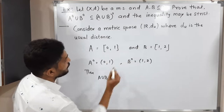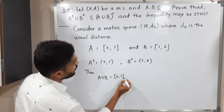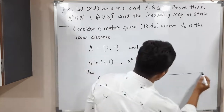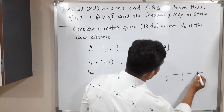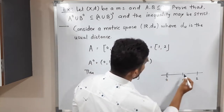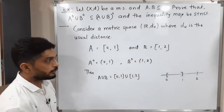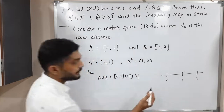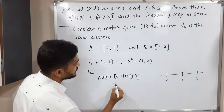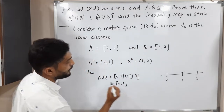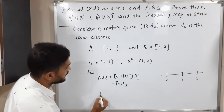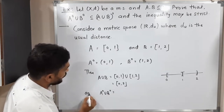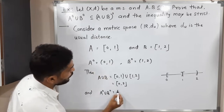Now let us take A union B. We have [0,1] union [1,2]. On the number line with points 0, 1, 2, the union of the two closed intervals gives us the closed interval [0, 2].